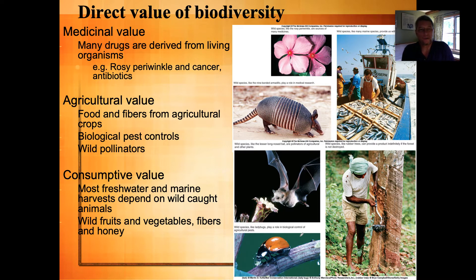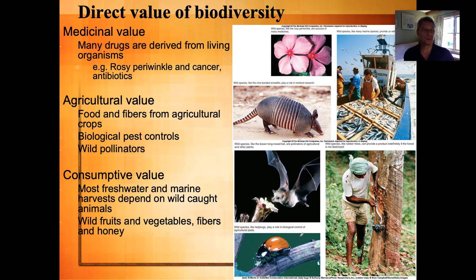There are a couple of advantages to having a naturally occurring diverse ecosystem. Many of the medicines developed over the last century or two are derived from living organisms. There are examples in your textbook on the rosy periwinkle and the production of antibiotics. The first penicillin was discovered in a mold, a type of fungus. These are things we derived by learning about naturally occurring systems.